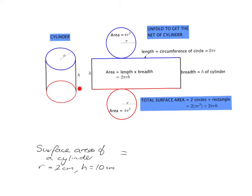The breadth is just the height of the cylinder. So the total surface area of a cylinder is two lots of the circle area plus the area of the rectangle. The area of the rectangle is length times breadth — the length is two pi r because it's the same as the circumference of the circle, and the breadth is h, the height of the cylinder. So if I've got a cylinder with a radius of two centimetres and a height of 10 centimetres, what's its total surface area?